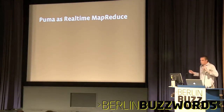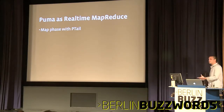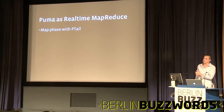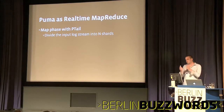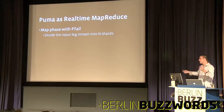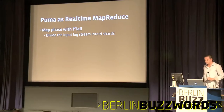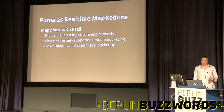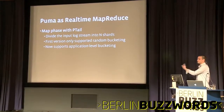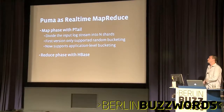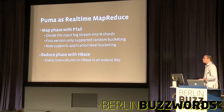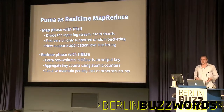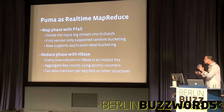One way I like to think about Puma is as real-time MapReduce. The map phase is ptail — all these different web clients are using Scribe, which is basically an aggregator, to write into a single file or set of files in HDFS. Ptail takes that log stream and divides it automatically into N shards. You can say you want 10 clients or 50 clients — that's basically your map split. The first version was only random bucketing, but the new version supports application-level bucketing, so you can say every single thing for this user always goes to this shard. Then the reduce happens inside of HBase: every row and column in HBase becomes an output key, and we aggregate key counts using atomic counters, or keep appending a list of stuff.